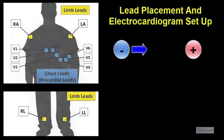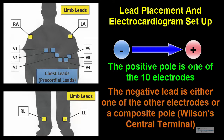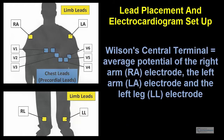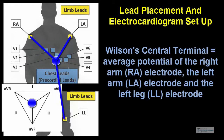Each of these leads represents the electrical potential difference between two points. For each lead, the positive pole is one of the 10 electrodes. The negative pole is either one of the other electrodes or a composite pole known as Wilson's central terminal. Wilson's central terminal is produced by averaging the measurements from the right arm electrode, the left arm electrode, and the left leg electrode to give an average potential across the body.